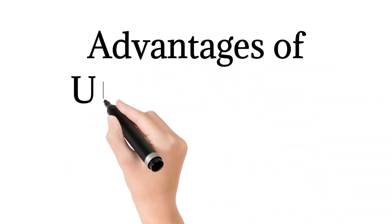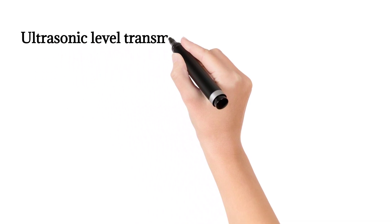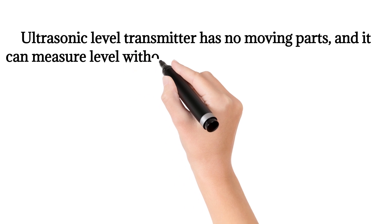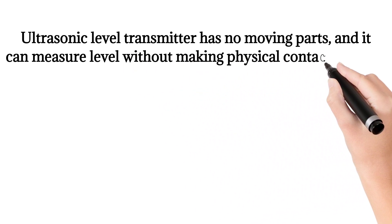Advantages of ultrasonic level transmitters: Ultrasonic level transmitters have no moving parts, and they can measure level without making physical contact with the object.